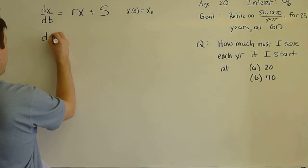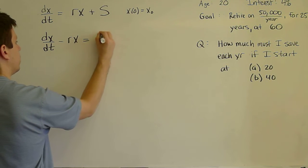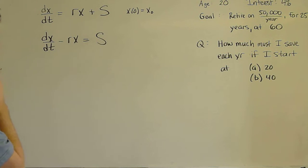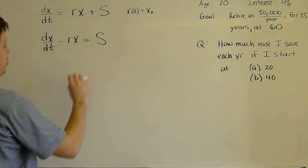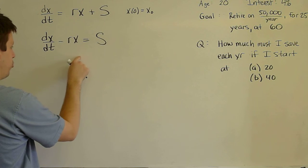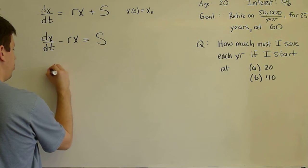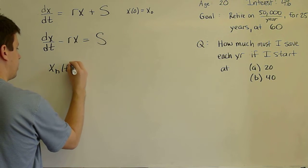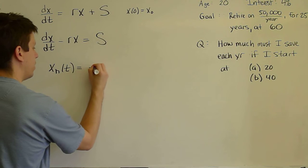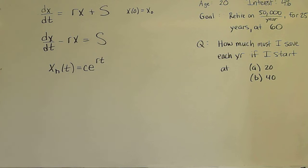We put it into standard form. And it is a linear first-order homogeneous constant coefficient problem. Sorry, not homogeneous. But we first find the homogeneous solution. We can observe from this constant coefficient left-hand side that the homogeneous solution will be e^(rt) times an integration constant. We've solved enough problems that we can spot that.